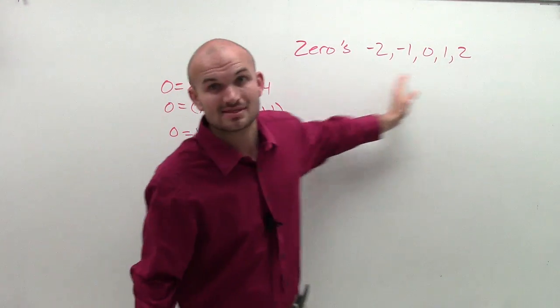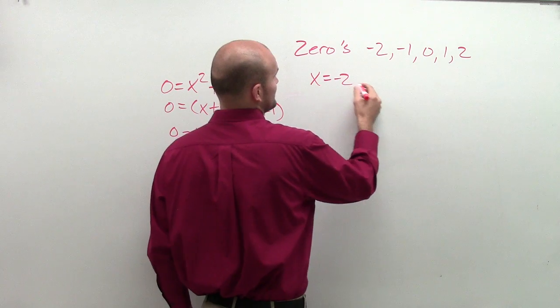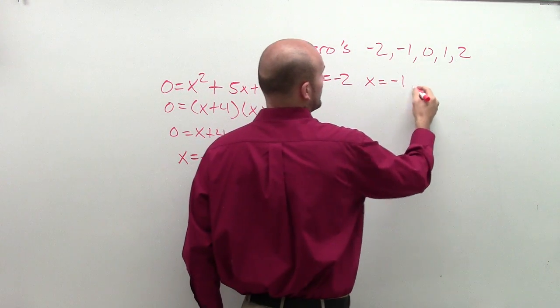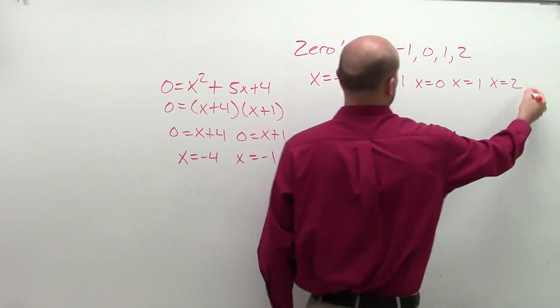So what I'm going to do is I just have my zeros laid out. So the first thing I'm going to do is I'm going to write x equals negative 2, x equals negative 1, x equals 0, x equals 1, and x equals 2.